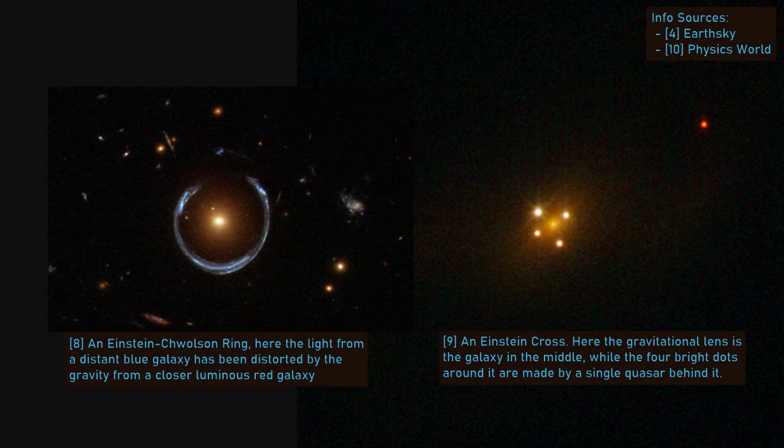The optical phenomena caused by gravitational lensing come in a variety of shapes and sizes, of which the Einstein-Khvolson ring and the Einstein cross are the best known.